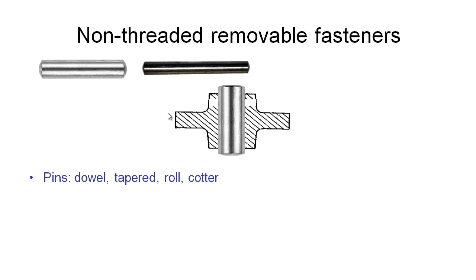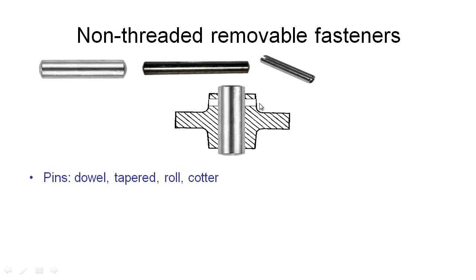A third pin option is a roll pin. This pin is not solid but is a flat piece of steel rolled up into a circular shape that doesn't fully close. We can use a roll pin with a diameter slightly bigger than the hole, and as we hammer it in, it compresses elastically and provides friction to stop it from coming out. This is easier to install into drilled holes, which is cheaper, but roll pins are not as strong as a similar solid taper or dowel pin.